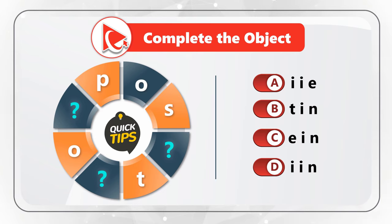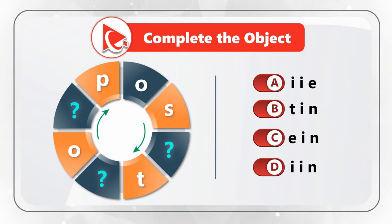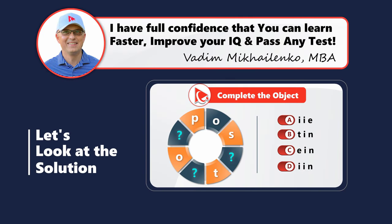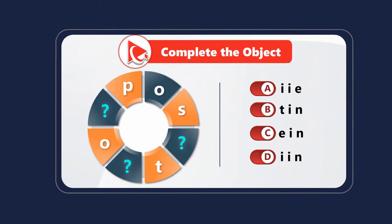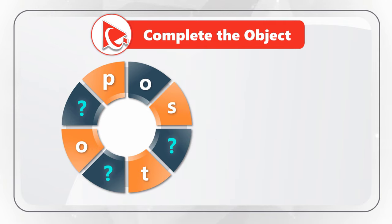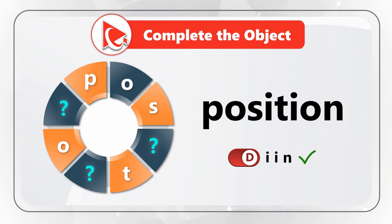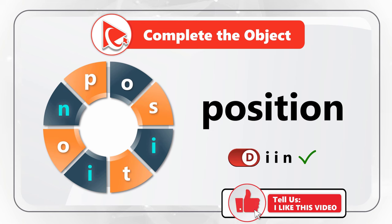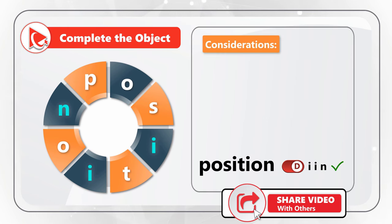I'm going to give you a quick hint to help you solve it: take a close look at what happens if you move clockwise. I'm moving forward to share with you my version of the answer. What's interesting about this question is how amazingly simple the solution is. If we start with the letter P, we can form the word 'position.' Let me spell it for you: P-O-S-I-T-I-O-N.